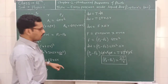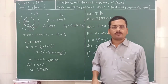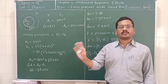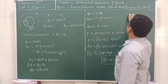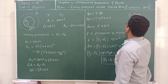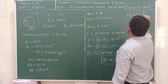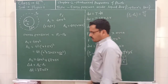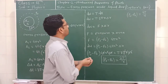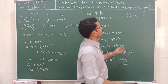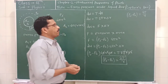Now, if we take a soap bubble — what is a soap bubble? A soap bubble has two surfaces: an inner surface and an outer surface. So this equation changes to: Pi minus Po is equal to 4T upon R. By using this equation, we can determine the excess pressure inside the liquid drop and inside the soap bubble, which is also called as Laplace's Law.